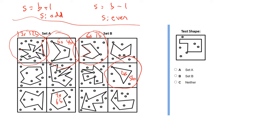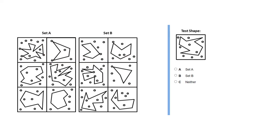Let's see how that applies to the first test shape. Counting: six sides and six blobs — they're equal. That clearly doesn't fit either set. Doesn't matter whether we've got the composite rule, because it doesn't fit even the first part. So that's definitely a neither. Looking at the next shape: nine sides and nine blobs — equal again. It doesn't fit either of our numerical rules, so that is another definite neither.